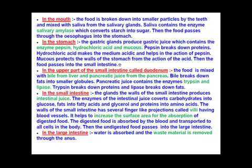First the food moves to the upper part of the small intestine, known as the duodenum. Here the food is mixed with secretions from the liver and the pancreas. The liver is the largest gland in our body and it secretes bile juice. The pancreas secretes pancreatic juice, and both these juices mix with the food material in the small intestine.